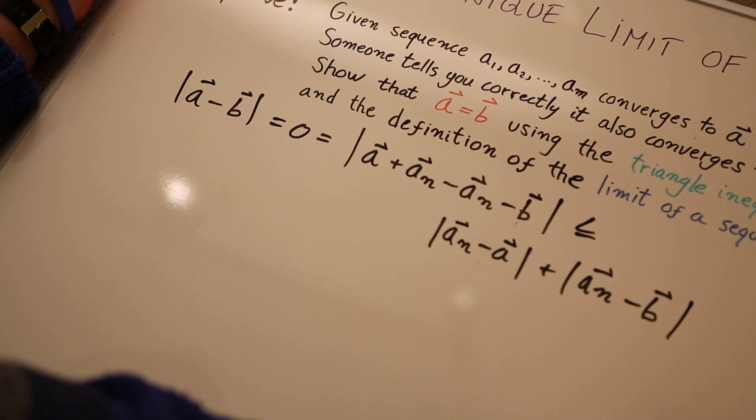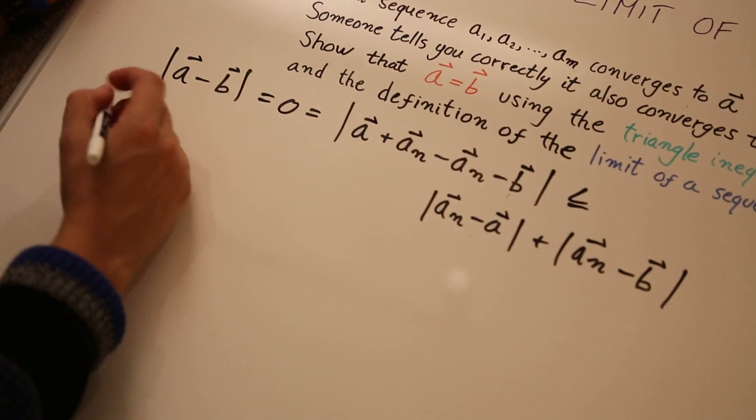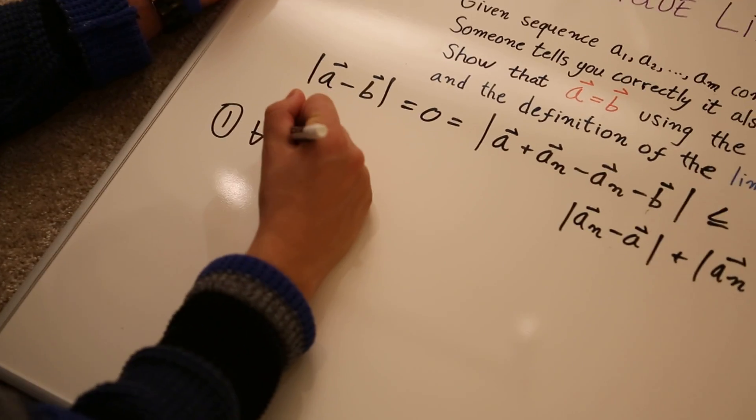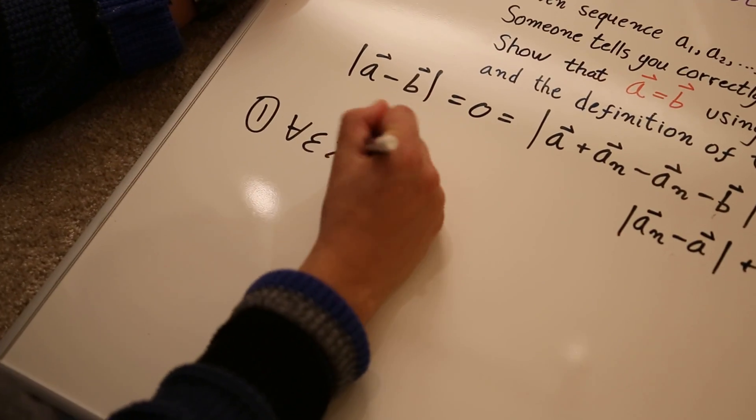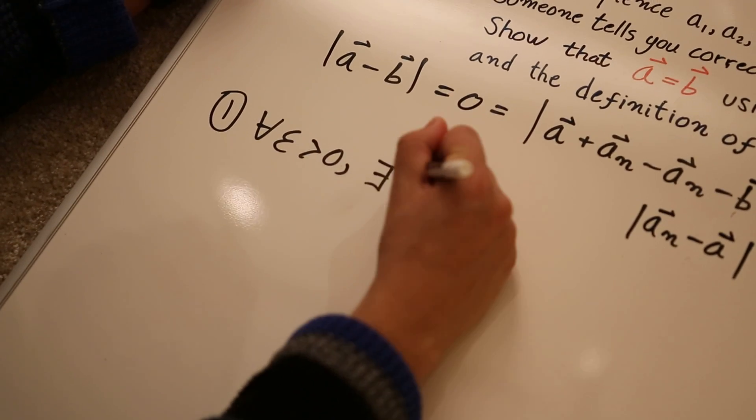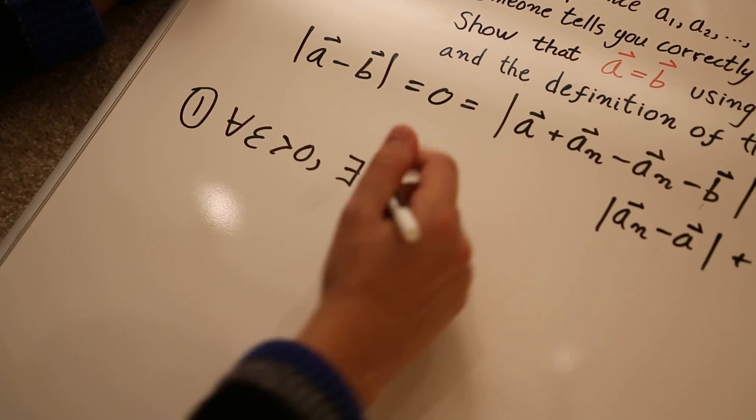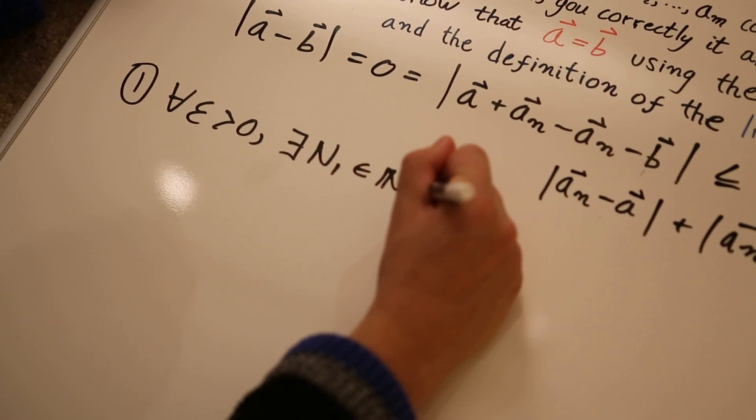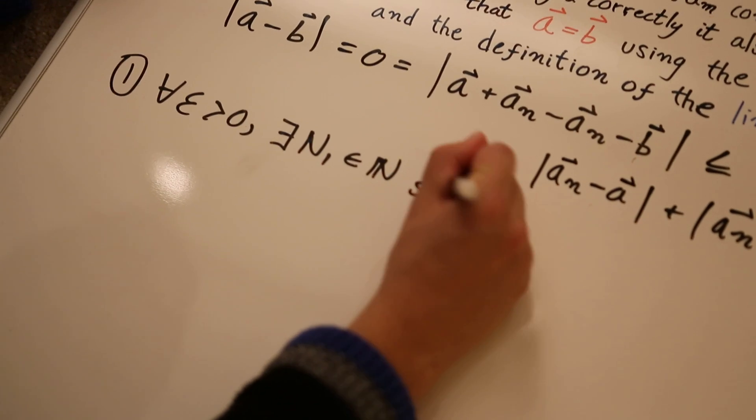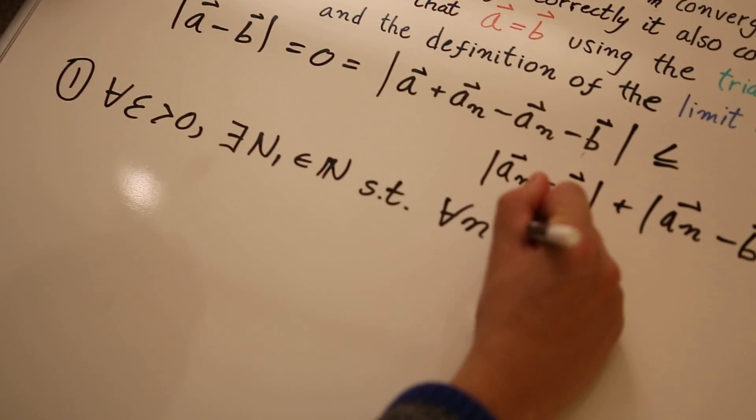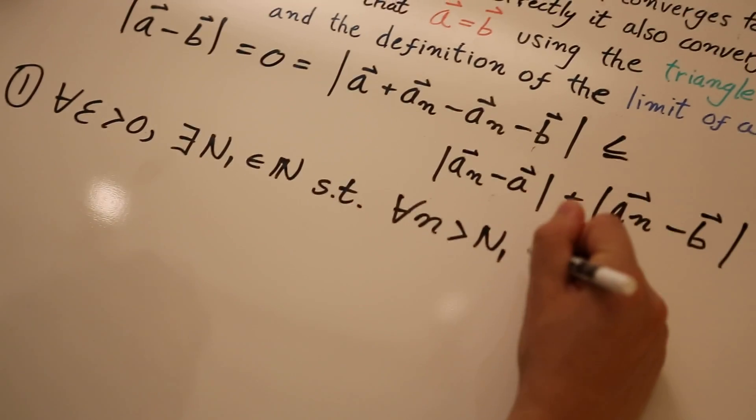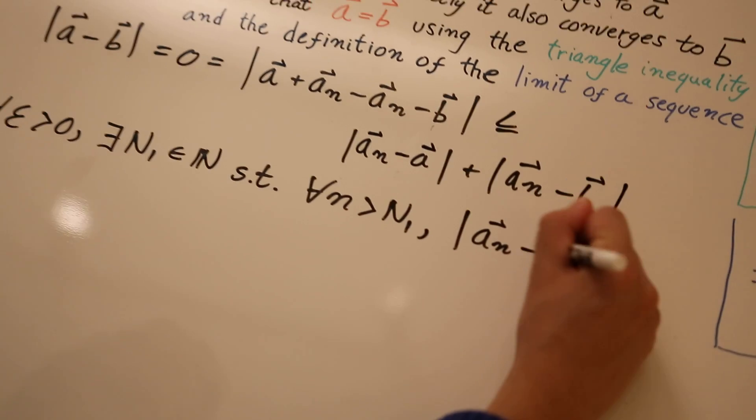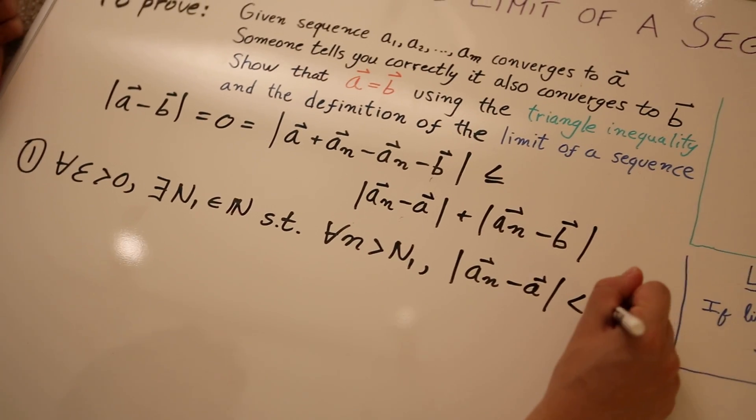Let's apply the definition of the limit of a sequence to each of these sequences. So, for the first one, for Alice's analysis, we'll say for all epsilon greater than zero, there exists some N1, let's call it N1 just to differentiate, and that's a member of the natural numbers, such that for all little n greater than N1, this is true.